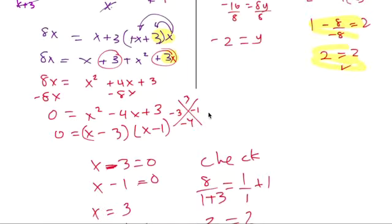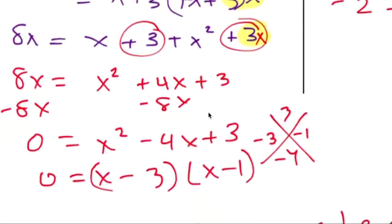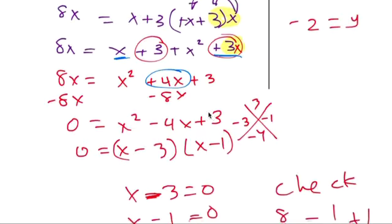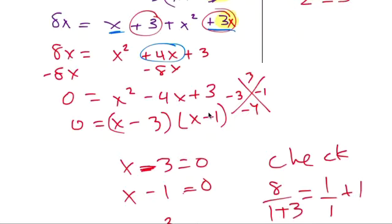So combining these like terms, to get this for x instead of the other way, and then get zero, and you factor. These are our possible answers here, so x is three and one.